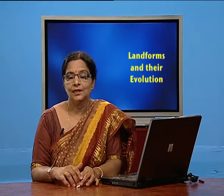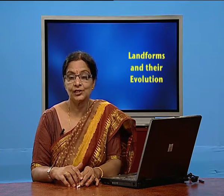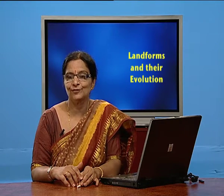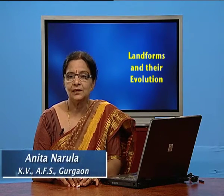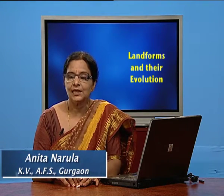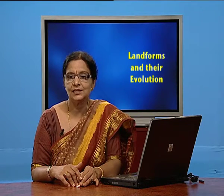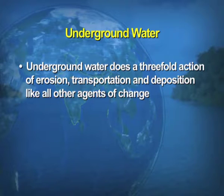The chapter we were discussing was landforms and their evolution. Under that, we have discussed the action of the river — how different landforms are formed by the erosional and depositional action of the river. Now we will be taking up the second most important agent in forming various landforms, that is underground water. Underground water does a three-fold action of erosion, transportation, and deposition, like all other agents of gradation.